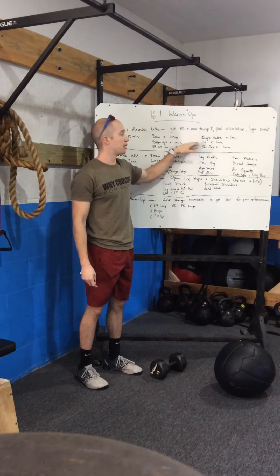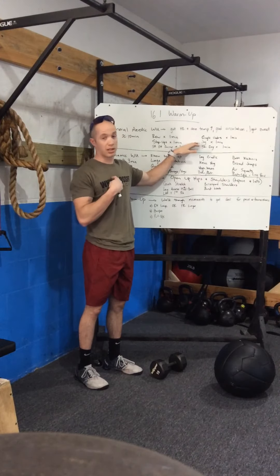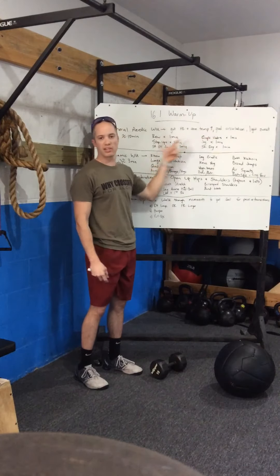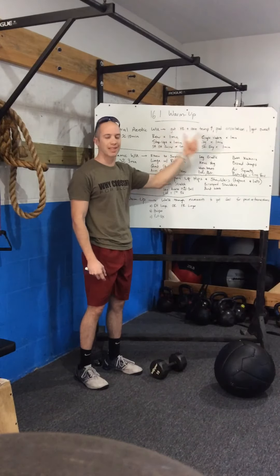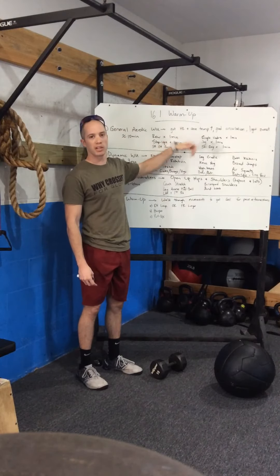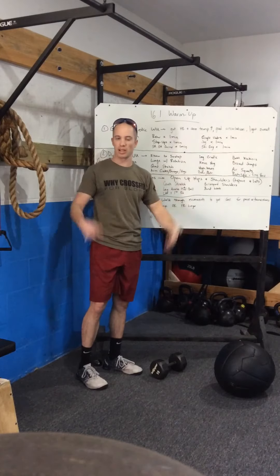Single unders—don't worry about double unders, just nice and smooth—something to get the heart rate up. Jog, go for a little jog, and then skier for a minute. So mix and match these, try to come up with something for 10 minutes, maybe 12 minutes.